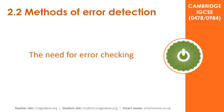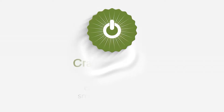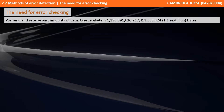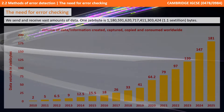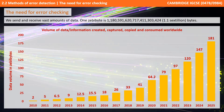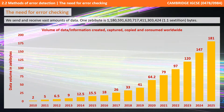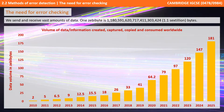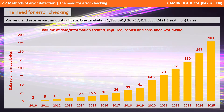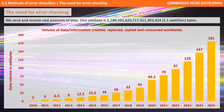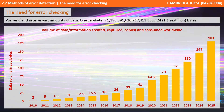In this short video we take a look at the need for error checking. We send and receive vast amounts of data. It's estimated that by 2025, the volume of data created, captured, copied and consumed worldwide will exceed 180 zettabytes. A zettabyte is 1.1 sextillion bytes.